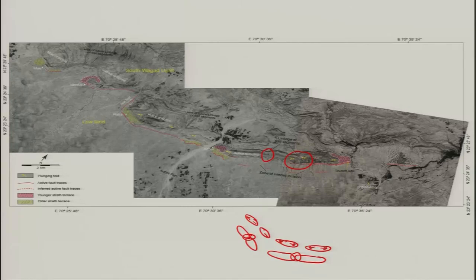Welcome back. In the last lecture we were talking about how folds are formed and how we see the interlinking of two folds to give rise to a larger anticlinal fold. As I was discussing, this was one of the best sites we identified for trenching to see the ancient signature of ancient earthquakes.